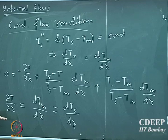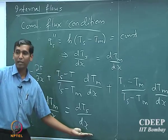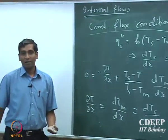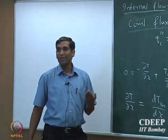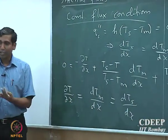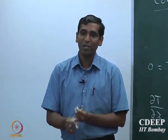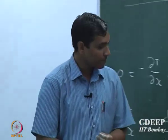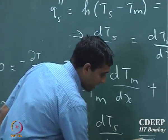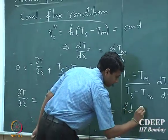What you have is that the local temperature gradient in the x direction should be equal to the local temperature gradient of the mixing cup average, and that should also be equal to the temperature gradient of the surface. That is an important insight. We have got two important things: the heat transport coefficient remains constant in the fully developed regime, and the gradients are actually equal. Again, this is in the fully developed regime.